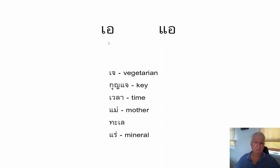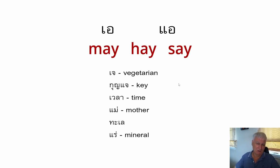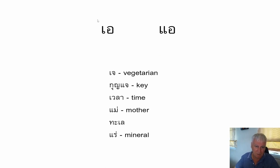Sara Air is fairly consistent in how it's pronounced, but Sara A isn't — I'll go into that in a minute. The basic way of pronouncing Sara A is just an A, like A-Y in English: may, hey, or say. The first example word has the Sara A vowel and the Jo-Jan initial consonant with no final consonant, making J — which means vegetarian or vegetarian food.